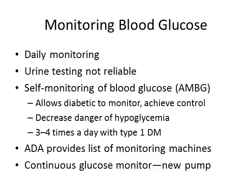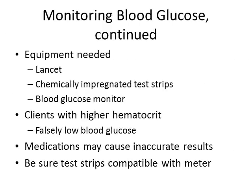When monitoring blood glucose, make sure the patient is familiar with their equipment: a lancet, strips that are not outdated, and a machine. In the hospital setting, ensure the lot number of the strips correlates with the machine being used. Be aware that clients with higher hematocrit can have falsely low blood glucose, and those with low hematocrit can have falsely elevated blood sugar. Medications such as vitamin C or uric acid can cause inaccurate results. Always confirm strips are compatible with the meter.